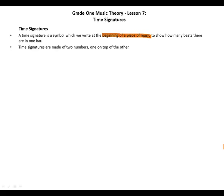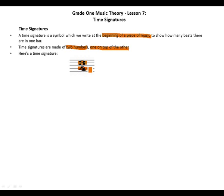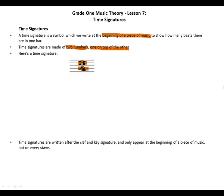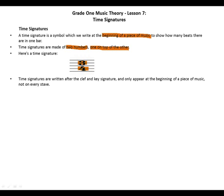Time signatures are made of two numbers, one on top of the other. Here we have an example — this is 3/4. Time signatures are written after the clef and key signatures and only appear at the beginning of a piece of music, not on every staff — only once at the beginning.